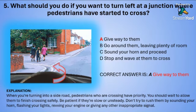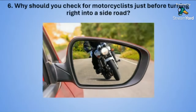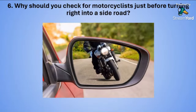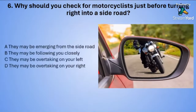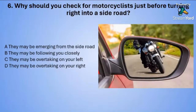Question number six: Why should you check for motorcyclists just before turning right into a side road? A: they may be emerging from the side road. B: they may be following you closely. C: they may be overtaking on your left. Or D: they may be overtaking on your right.